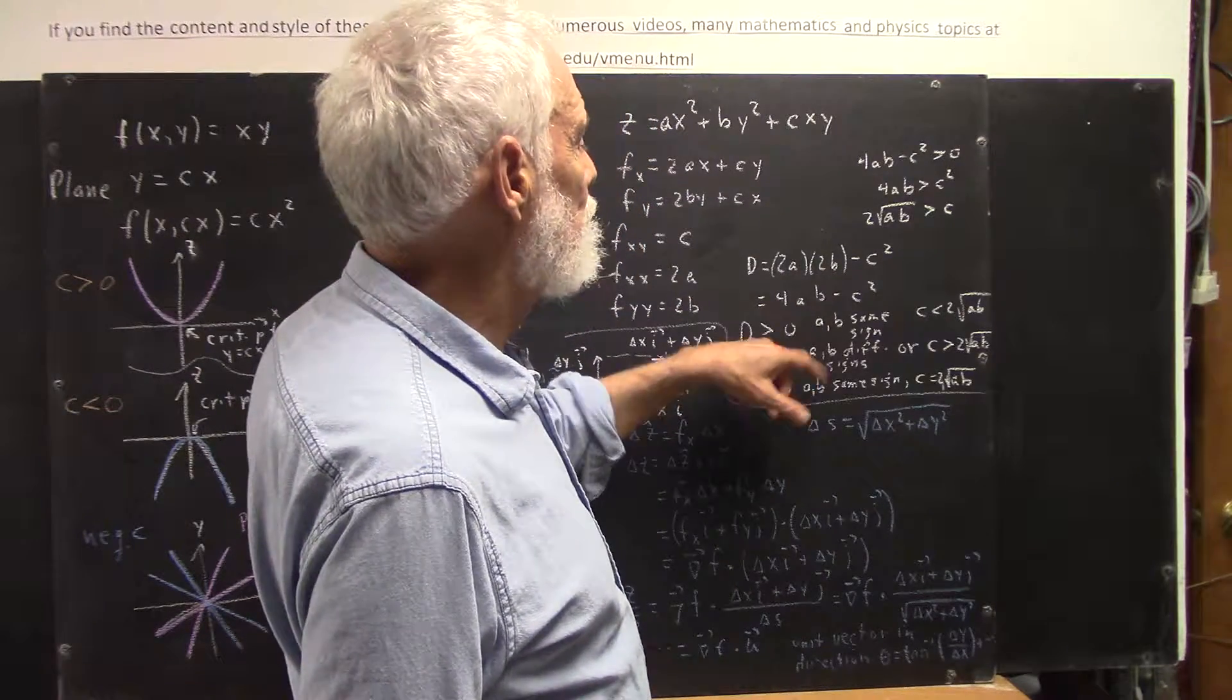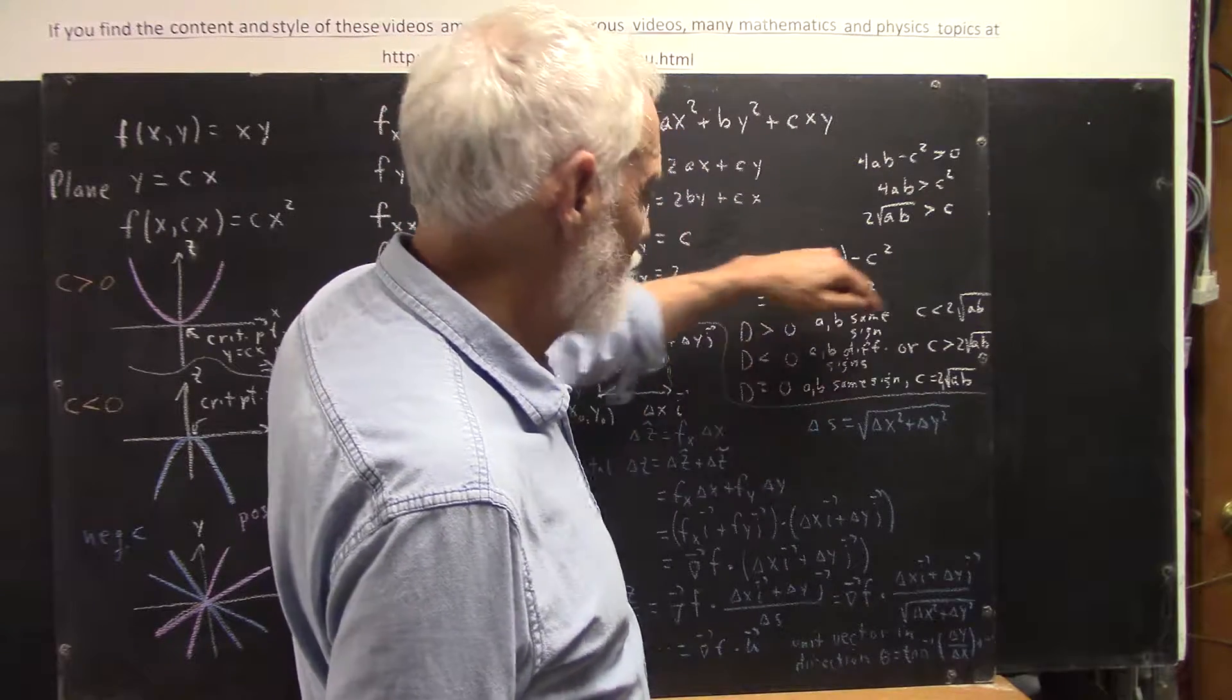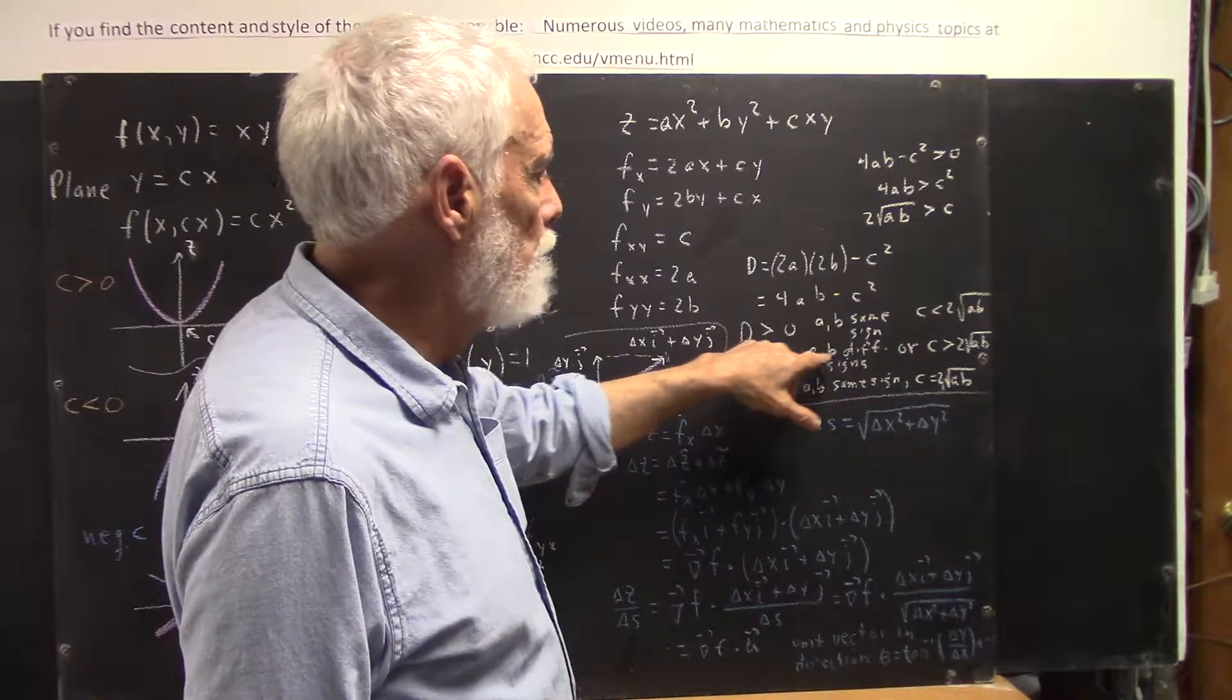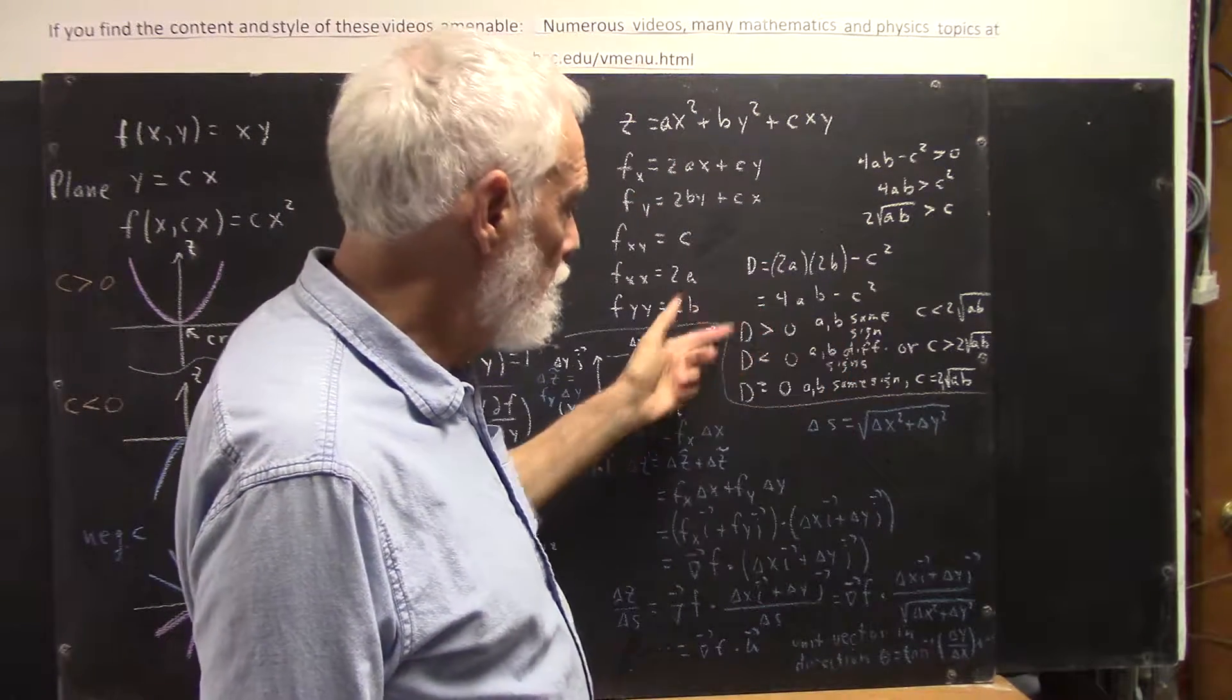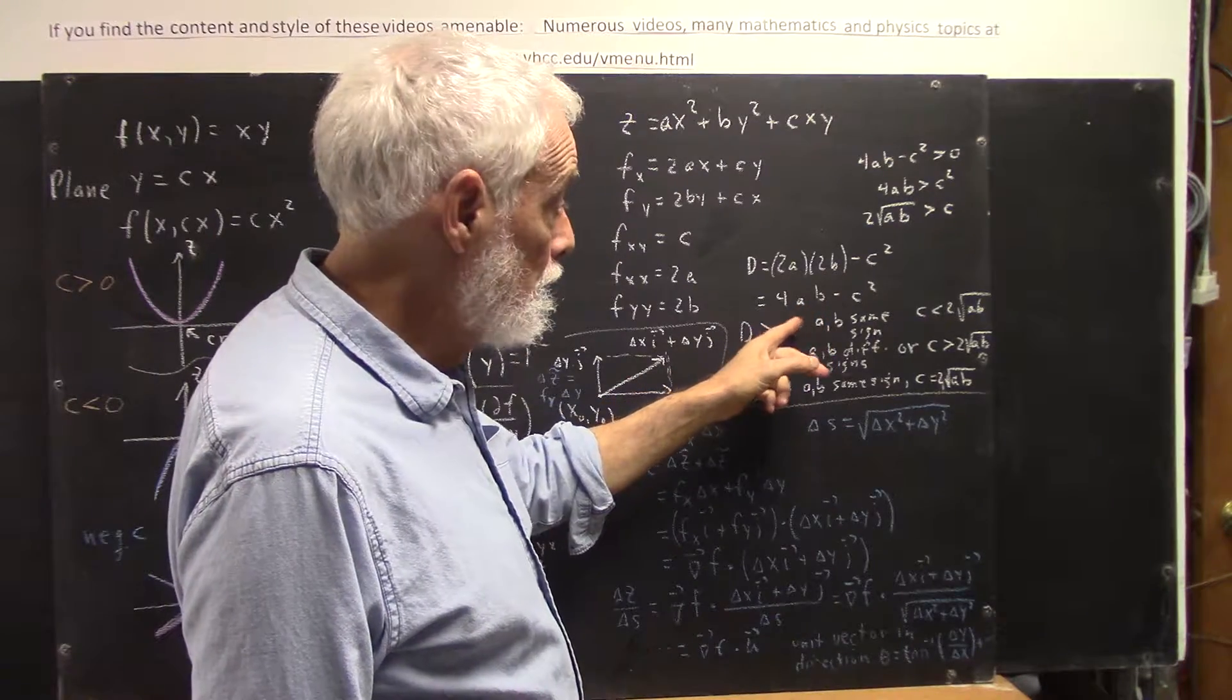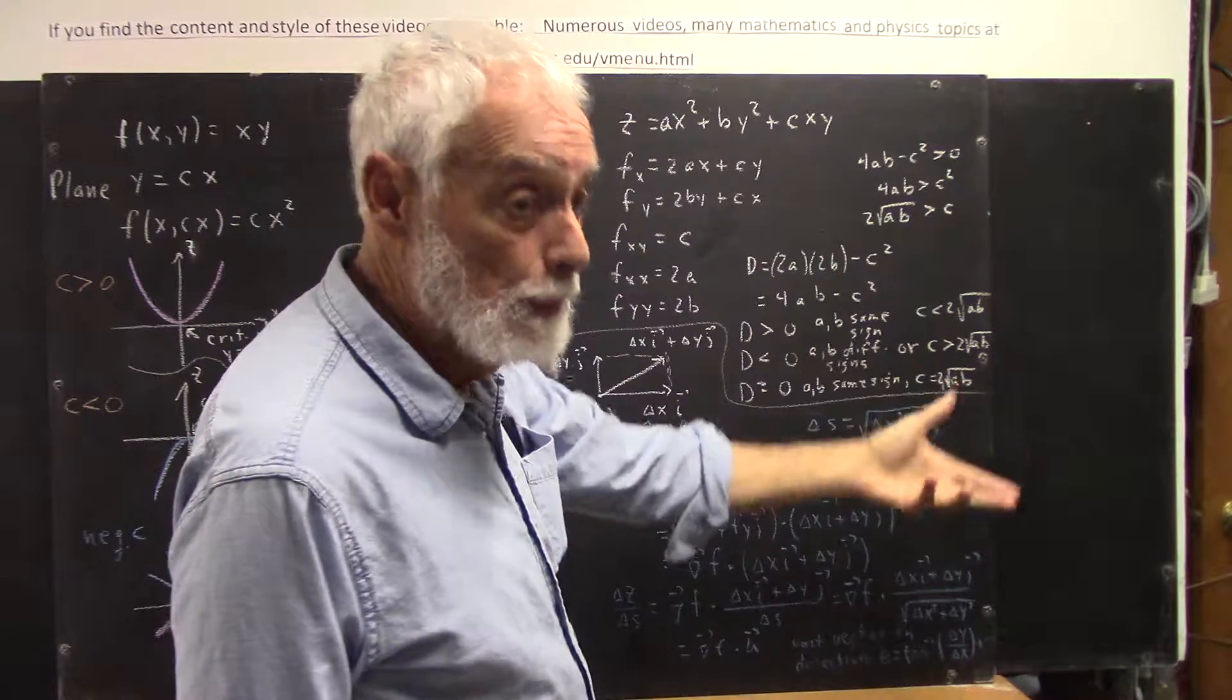And I didn't include another case. I don't see my word or there. I thought I'd written something wrong. Okay, I'm sorry. So if a and b have different signs, then d is automatically less than 0, because ab is going to be negative. And when you subtract c squared, it's going to be even more negative.